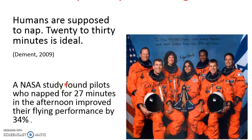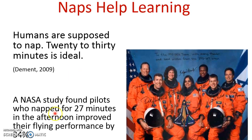One final thing: we know that naps help learning. A study done by NASA found that the optimal nap time — and this may surprise some of you — is 27 minutes. If you can take a 27-minute nap a day when you're sleep-deprived and miss a REM, it helps you recover that REM without interfering with your circadian rhythm. If you sleep much longer than that, you start to interrupt your natural biorhythms and can throw off your sleep cycle. So set your alarm to wake you in 27 minutes to get the most out of your nap.